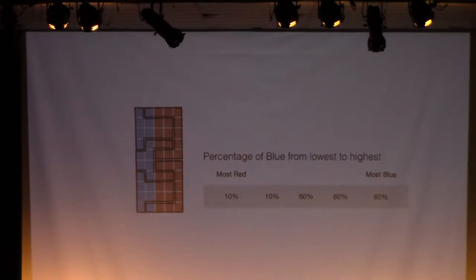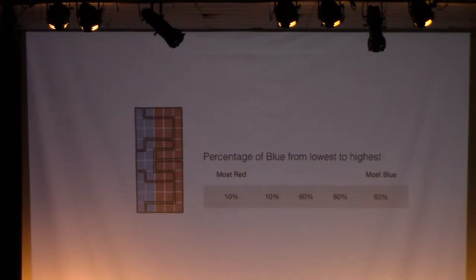You pack all the Republicans in the far two districts, the most Republican districts, and you spread pretty evenly the remaining Democrats across the others. And that's how you create it. It's cracking and packing. This is an example.